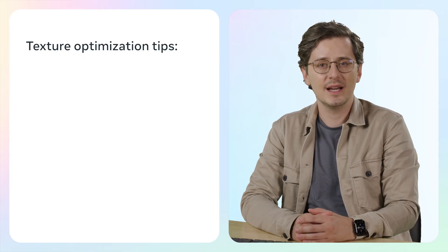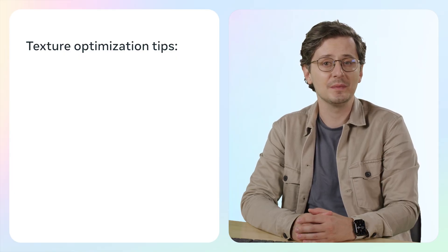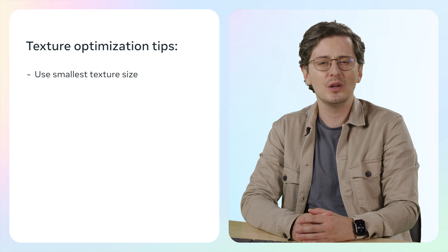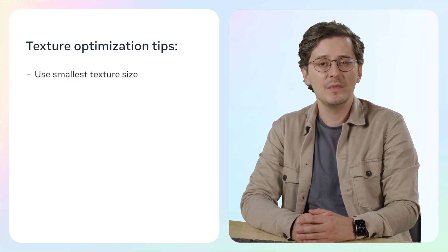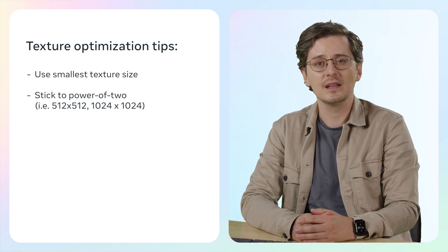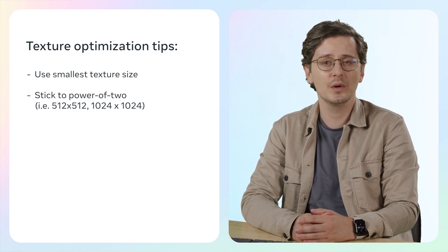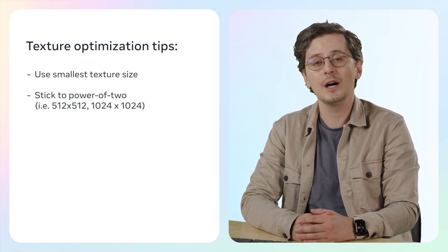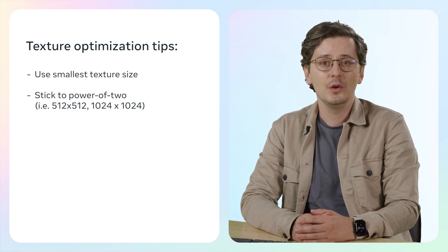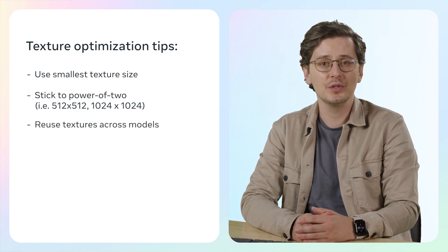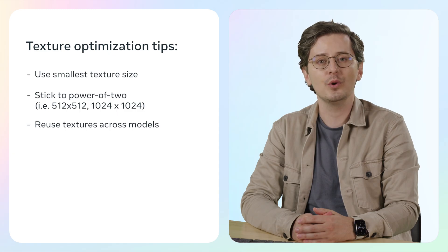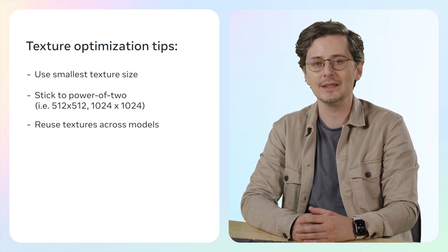Once your files are properly named, import the model and texture using the desktop editor. When importing textures, keep these optimization tips in mind. You'll want to use the smallest texture size that still maintains visual quality. Offer power-of-two sizes like 512 by 512 or 1024 by 1024 — this helps with image compression. You also want to pack and share textures when possible to reduce memory usage. By following these guidelines, you'll be able to import high quality textures while keeping your world performance friendly.